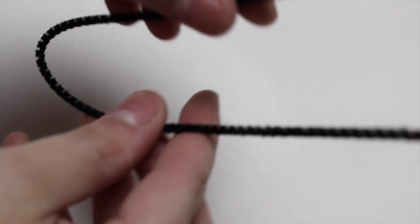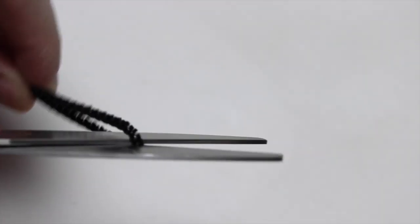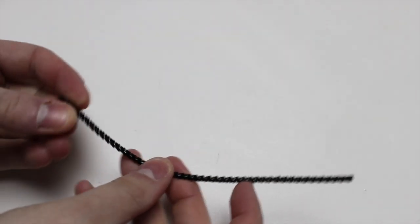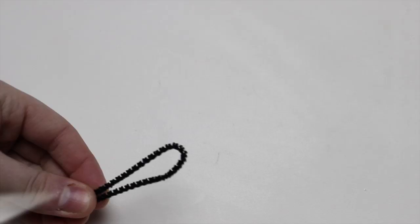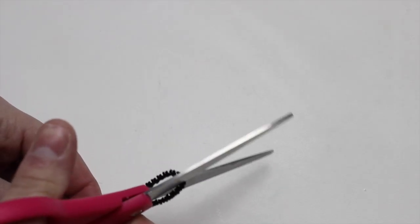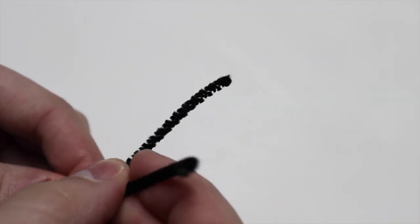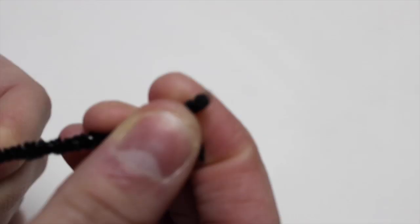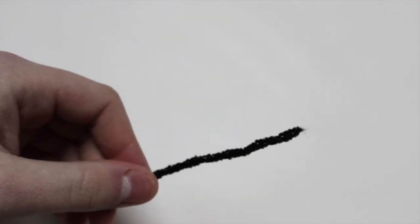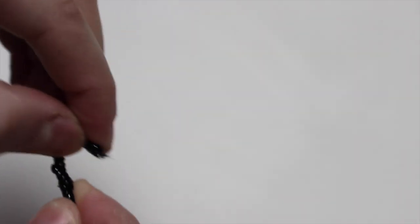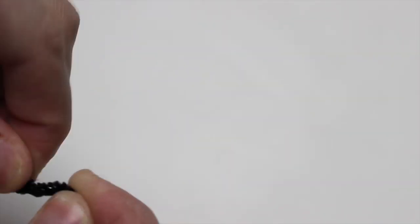Let's get started. To make the antennas, take the black pipe cleaner and cut it in half twice. Take two of the halves and start wrapping them around each other. When they are wrapped around each other, take one of the ends and roll it into a spiral.